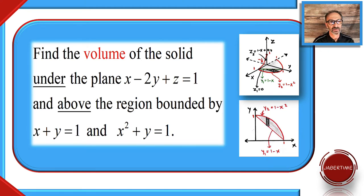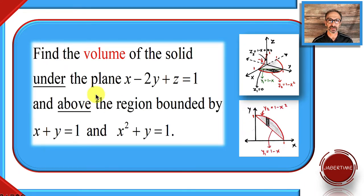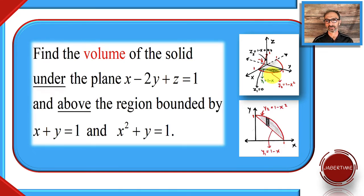Hi, welcome to my channel. This is another example of finding the volume of the solid under the plane x minus 2y plus z equals 1, and above the region bounded by x plus y equals 1 and x squared plus y equals 1. The focus here is practicing how to find the volume using triple integration — taking time to show the bounds and the graph, and seeing it as type 1, type 2, or type 3.